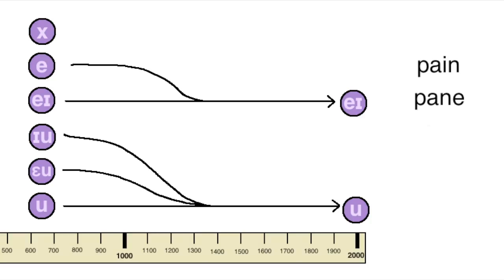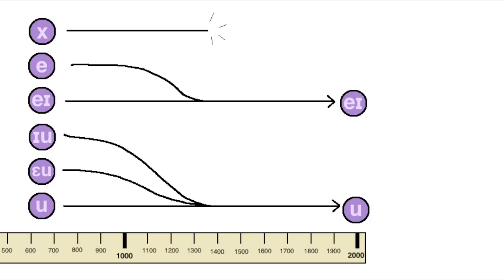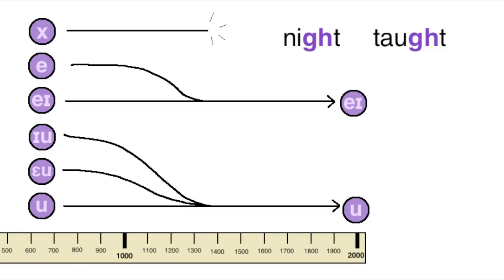With the result that pain, pane, do, dew, and due are all spelled differently even though the first two and the last three are all pronounced the same. At the same time, people just stopped saying kh altogether, which is why there are these useless gh letters at the ends of these words, which used to be pronounced night and taught.